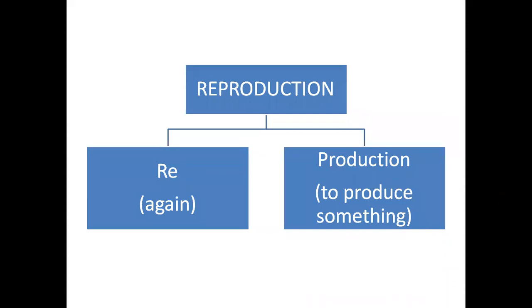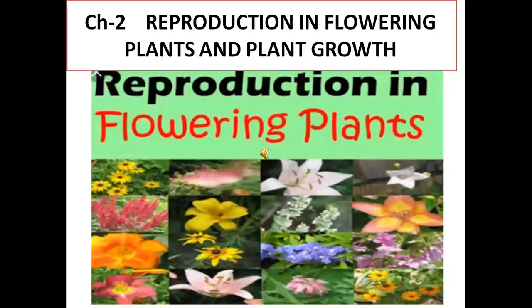Reproduction is a combination of two words: re and production. Re means again and production means to produce something. When anything is produced again and again, it is known as reproduction. I think you all understand the meaning of reproduction.